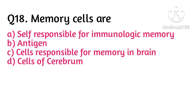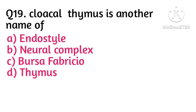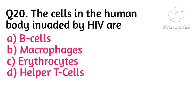Question number 18: memory cells — option A is correct; memory cells are self-responsible for immunologic memory. Question number 19: cloacal thymus is another name of — option C is correct, that is Bursa of Fabricius. Last question: the cells in the human body invaded by HIV are — option D is correct, that is helper T cells.